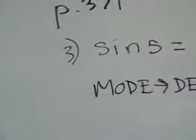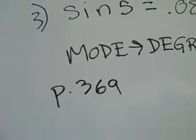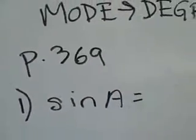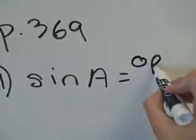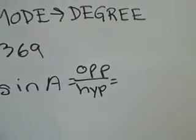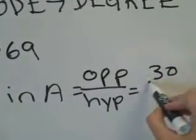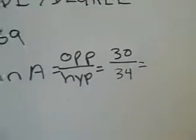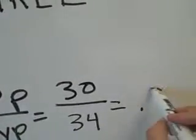Now let's go back to the front page, page 369, and look at problem number 1. It's asking you to find the sine of A — all we're doing is finding the ratio of the sides. Sine of A is equal to opposite over hypotenuse. Find angle A in the picture. The side across from angle A is 30, and the hypotenuse is 34. So in our calculator, we do 30 divided by 34, and you should get .88.